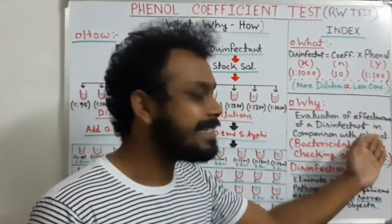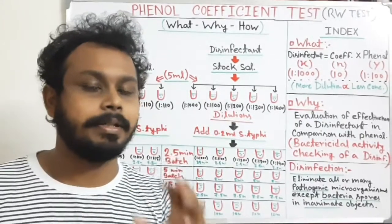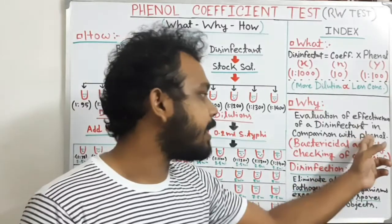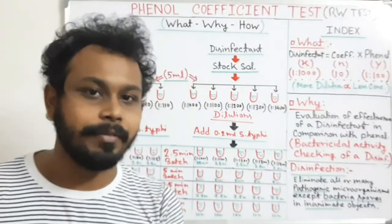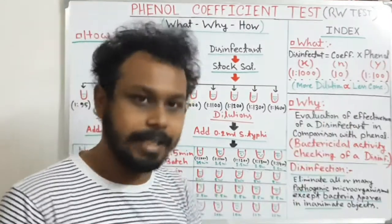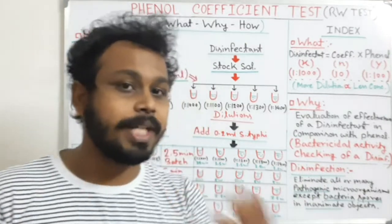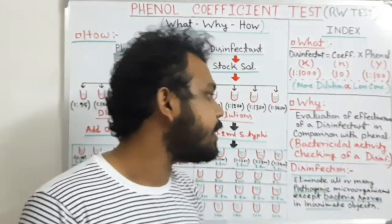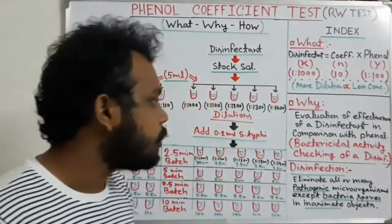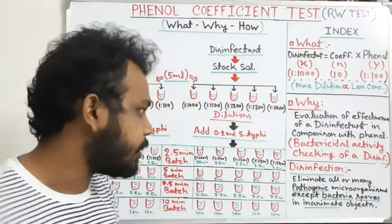Here phenol is used as a standard disinfectant because phenol is the first disinfectant ever used. So we take it as a standard to evaluate the effectiveness of an unknown disinfectant. This test checks the bactericidal activity of a disinfectant.